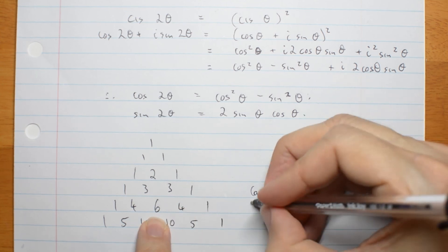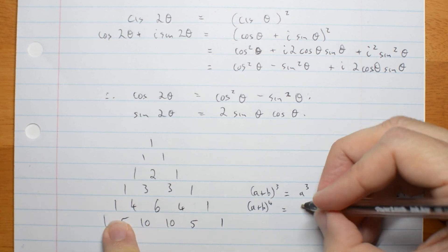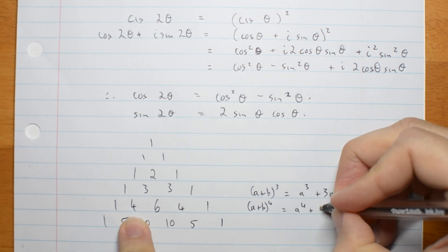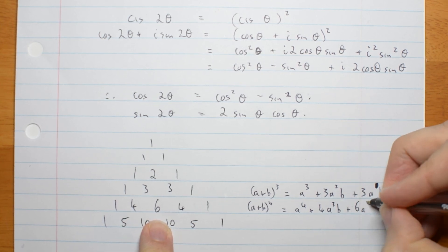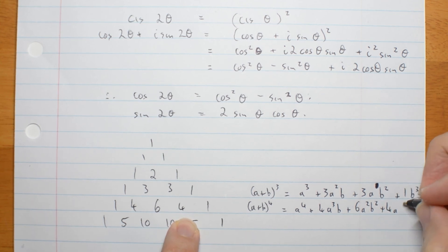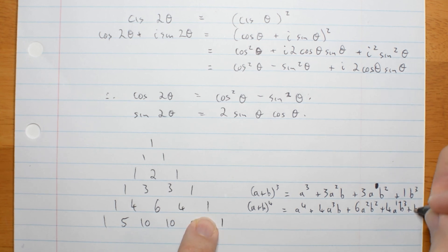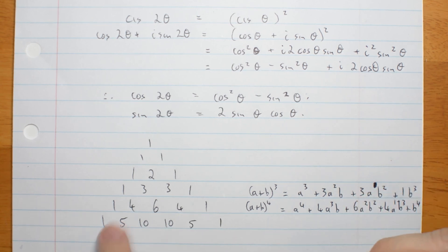This one says, I'm going to struggle to fit it on the line. It's a to the 4th, 4a cubed b, 6a squared b squared, 4a to the 1b cubed, 1b to the 4th. And so on. That's how you use Pascal's Triangle to come up with these coefficients.